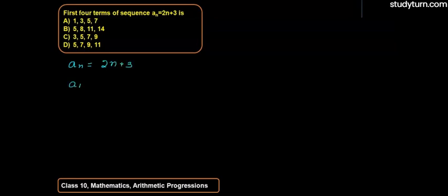So first of all, if we see here, first term, for first term a1, so here for first term n will be 1. Similarly for a2, a3 and a4, first 4 terms we need to tell here. So for a2, n will be 2, for a3, n value will be 3 and similarly for fourth term, n will be 4.